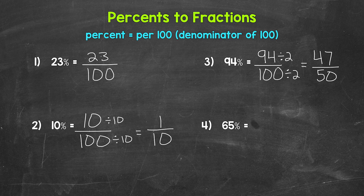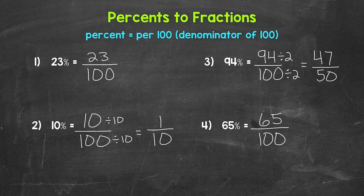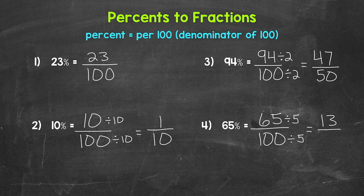Lastly, number four, where we have 65%. We write this as a fraction: 65 over 100, 65 hundredths. We can simplify again — we have a greatest common factor of 5. 65 divided by 5 gives us 13, and 100 divided by 5 gives us 20. The only common factor between 13 and 20 is one, so we are in simplest form: 13 over 20, 13 twentieths.